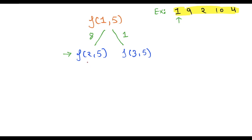From the second stone, the frog again has two options: jump to the third stone or to the fourth stone. If it jumps to the third stone, the cost is |h[2] - h[3]| = |9 - 2| = 7, and we then need f(3, 5).